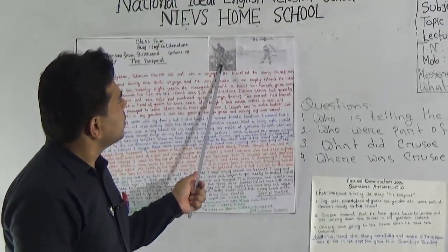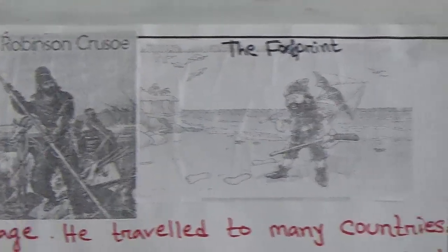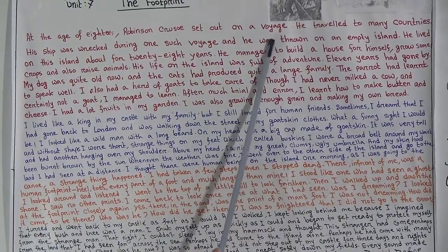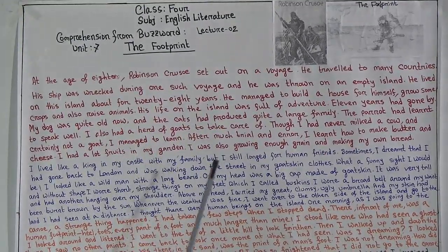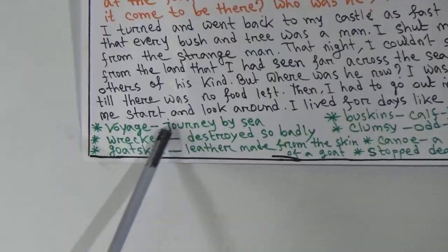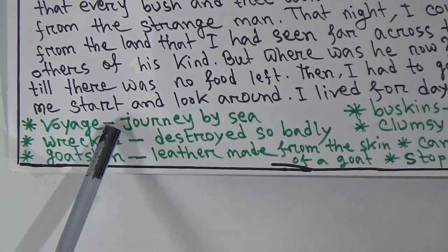First of all, here is the picture of Robinson Crusoe. This story is written by Daniel Defoe. Now, before we read the passage, we need to be introduced to some vocabulary. Read out the vocabulary first, then the passage — our story will be very easy for you. So: 'voyage' means journey by sea.